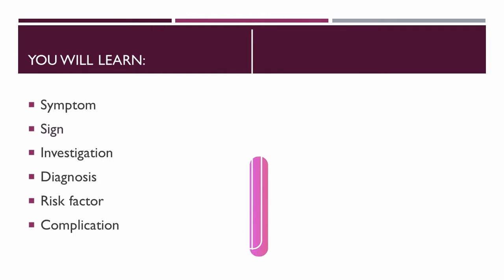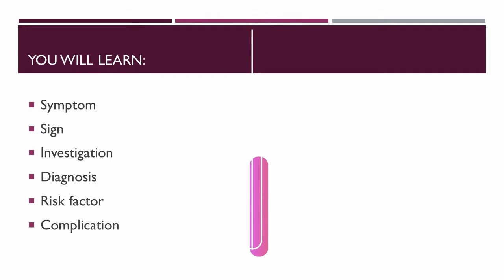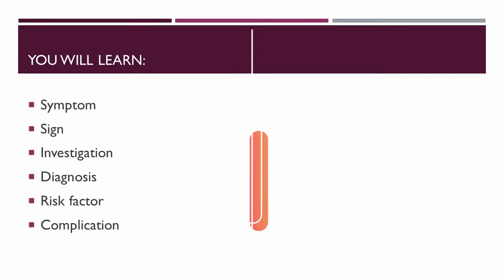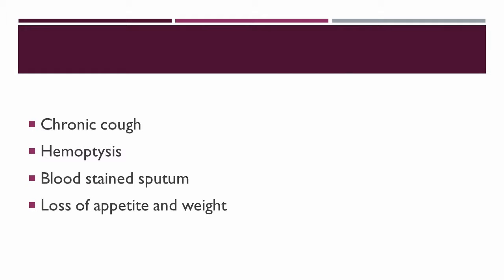So based on this story, I will explain the meanings of the medical terms mentioned previously. What are symptoms? Symptoms are conditions that are described by the patient, usually obtained from history taking. For example, in this case, the symptoms are chronic cough, hemoptysis, blood-stained sputum, loss of appetite, and loss of weight.